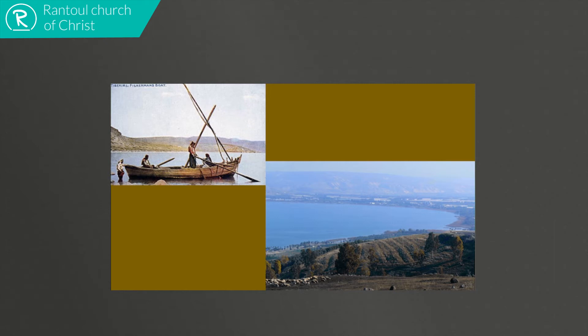Question 3 says, what advice did Jesus give to these men, referring to verses 5 and 6? As on the previous occasion recorded in Luke chapter 5 at the beginning of Jesus' ministry, Jesus instructed them to cast their nets on the other side of the ship. The result was the same — the catch was so great that they were not able to draw it in.